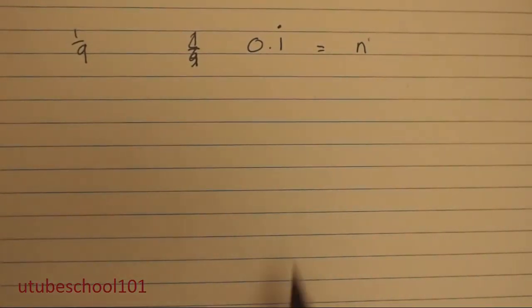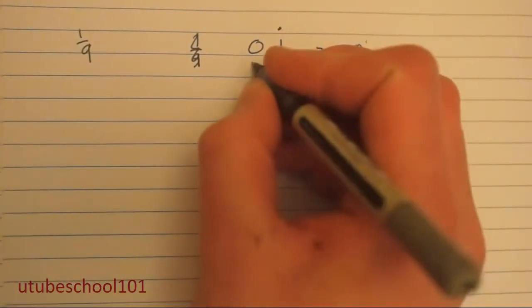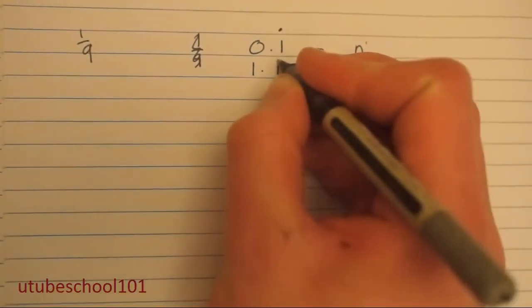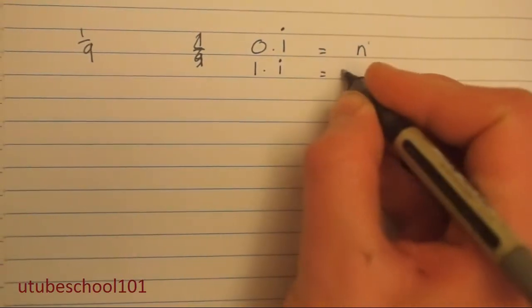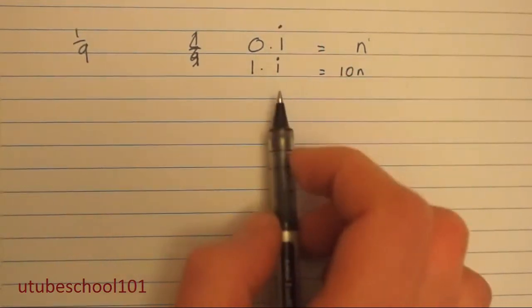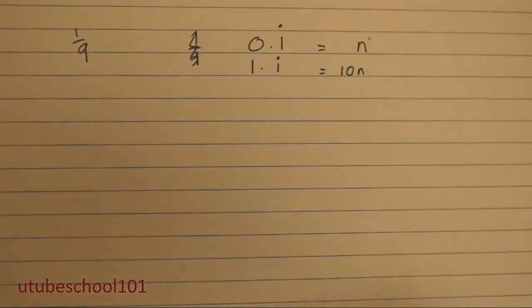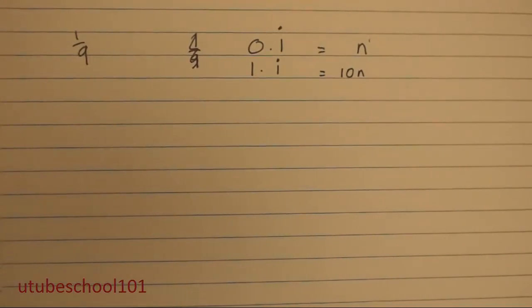Our next step we're going to do is we're going to shift the 1 recurring to the left, so you get 1.1 recurring equals 10n. We do this because we want to line up the recurring to prepare us for the subtraction which we're about to do.